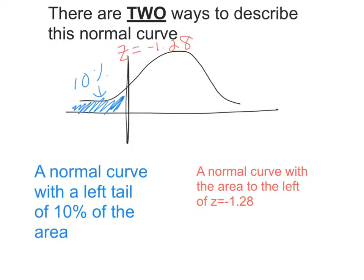On a normal curve, the reason there are two units is because we could use either one to describe the same picture. If I have a normal curve with a cutoff z-value of negative 1.28, by placing the cutoff there I'm automatically saying this tail area is 10%, because the total area under the normal curve is 100%. So I could describe this picture as a normal curve with 10% of the area in the left tail, or as a normal curve with area to the left of z = −1.28.